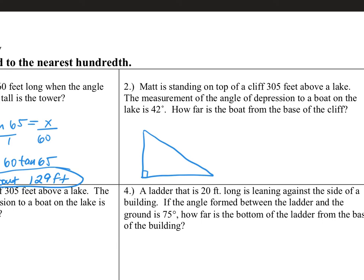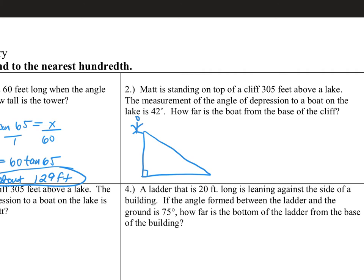Matt is standing on the top of a cliff — he's up here. It says he's 305 feet above the lake. That's the height. How high he is from the lake. He's on a cliff looking down. He's looking downward at an angle of 42 degrees. So we can look at this two different ways: I can say that 42 up at the top is the same as 42 down here at the bottom, or I can say 90 minus 42, which is 48 — I could say this angle here is 48 degrees.